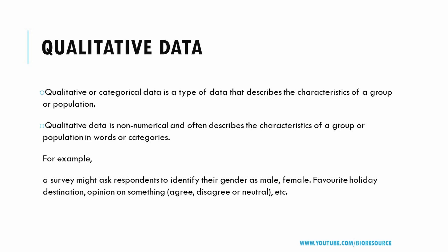Qualitative data describes the characteristics of a particular group or population in words or categories. It is non-numeric, classified into words or categories, and cannot be measured or counted in the form of numbers — that is why it is known as categorical data.